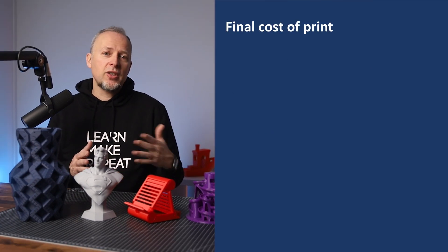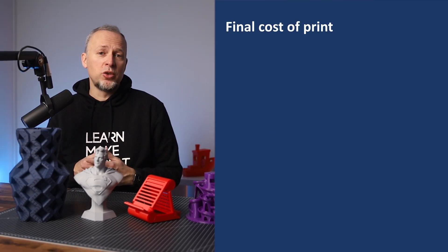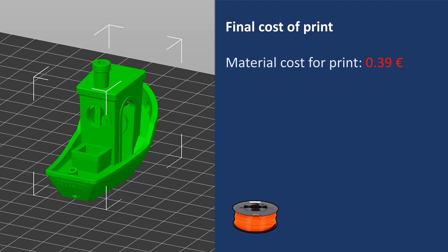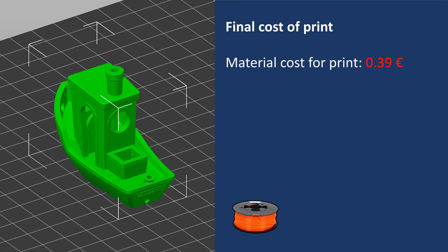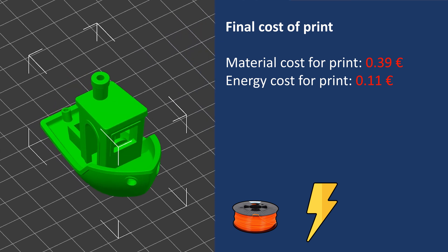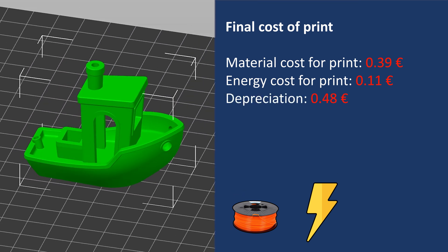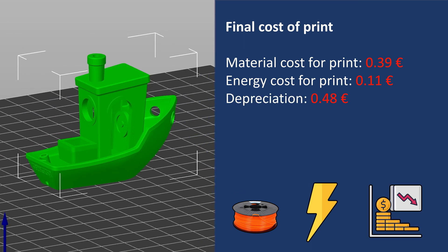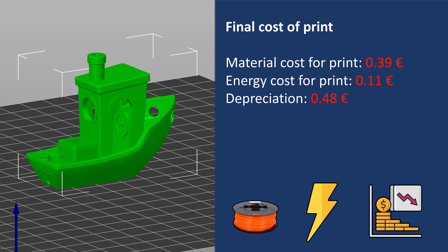Let's add up the numbers. This print costs 0.39 euro for the material, 0.11 euro for the energy, and 0.48 euro for the printer usage, which means we have a total of 0.98 euro for this print.